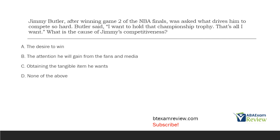Jimmy Butler, after winning game two of the NBA Finals, was asked what drives him to compete so hard. Butler said, 'I want to hold the championship trophy — that's all I want.' What is the cause of Jimmy's competitiveness? When we talk about cause, we're talking about function. Function is the reason behavior occurs, and our four primary functions are escape, tangible, attention, and automatic. So we're looking at the cause of his competitiveness. He says, 'I want to hold the championship trophy.' Holding the championship trophy causes the competitiveness — that's what we're looking for.